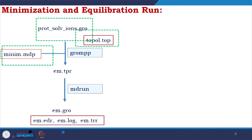The first step is minimization, where we take the .gro file, minim.mdp, and topol.top file. We apply grompp and get em.tpr, then perform the first MD run. We get energy minimization output em.gro as the main file, along with em.edr (energy file), em.log (log file with all information), and em.trr (trajectory file).